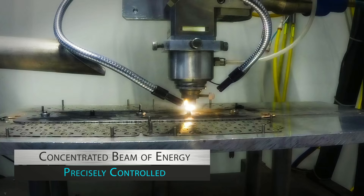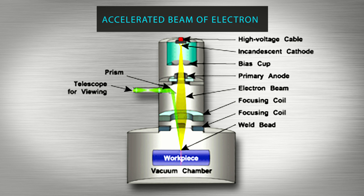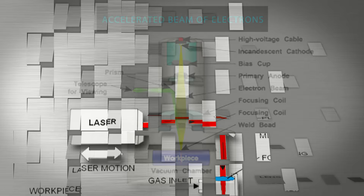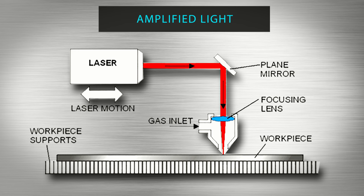EB welding uses an accelerated beam of electrons that can be magnetically deflected and focused on the workpiece. Laser welding uses amplified light that is delivered and deflected by glass lenses, mirrors, and often a fiber optic cable.